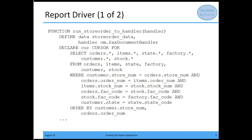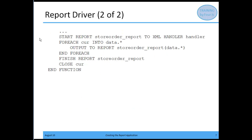Now I start my report and specify the name of the report block, but this time I'm saying to the XML handler and I pass in that om.sax document handler variable that I created. Then for each row that's going in, I want to output it to the report. For each row I'm reading in, I output it to the report. I then finish the report and close the cursor.